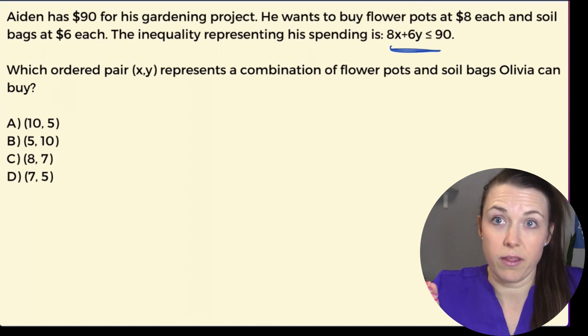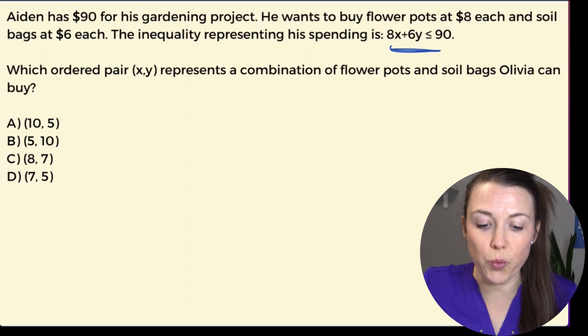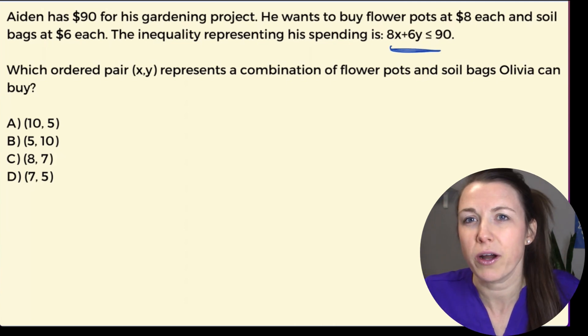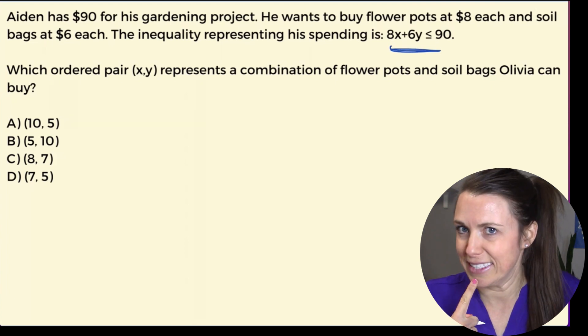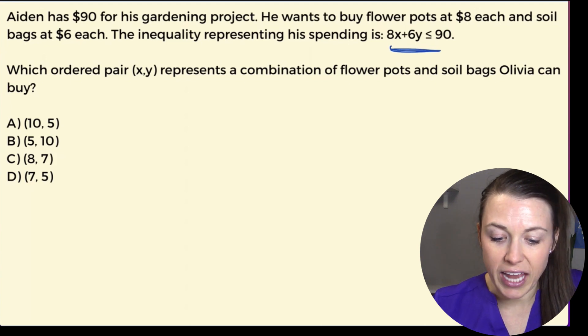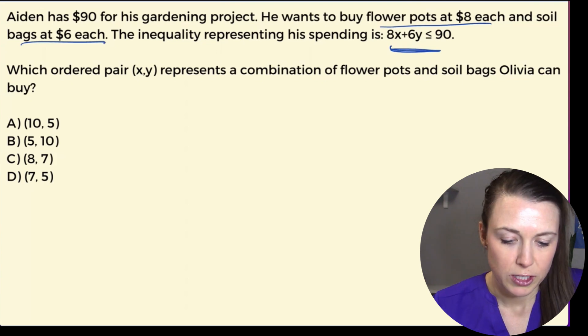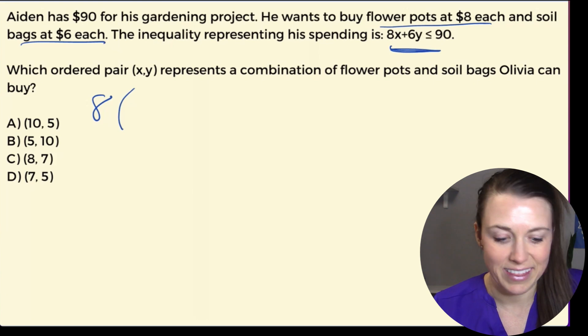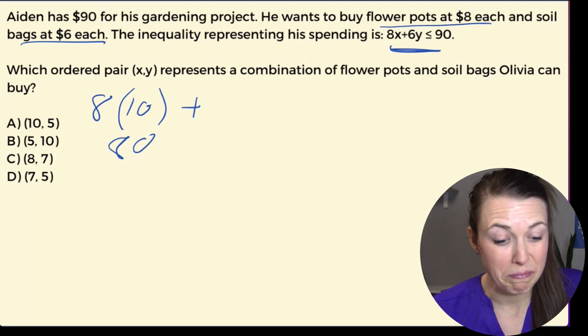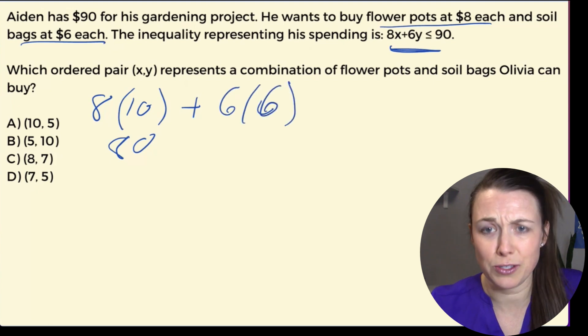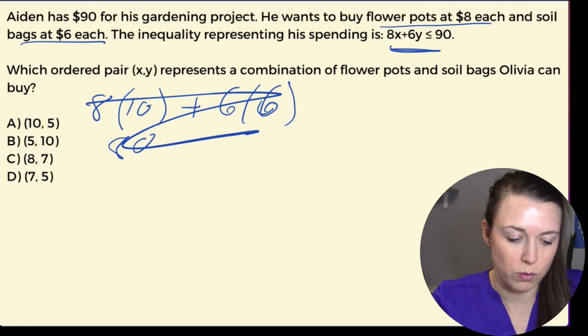I know that 8 is going to be for the flower pots, so then 6 is going to be for the bags of soil. I have 8 times, starting with letter A, 10. Now hold it right there. I know that 8 times 10 is 80. So unless this one here is less than 10 or 10 or less, then I know it's not going to be the answer. I have 6 times 6 I know is 36. So A is definitely not the answer. It goes way over.